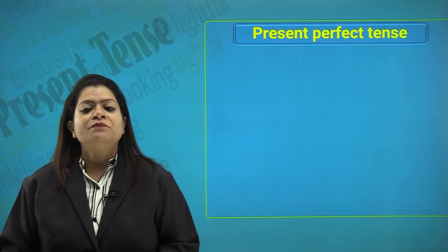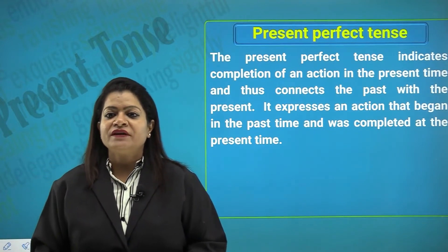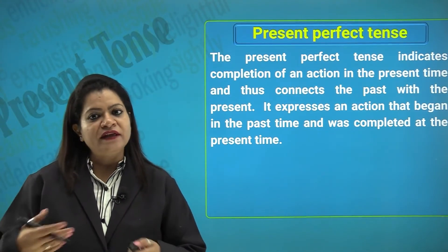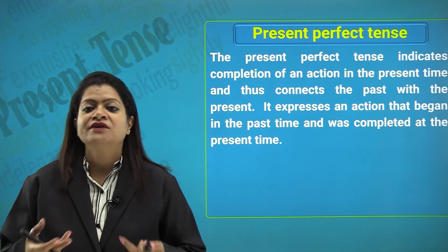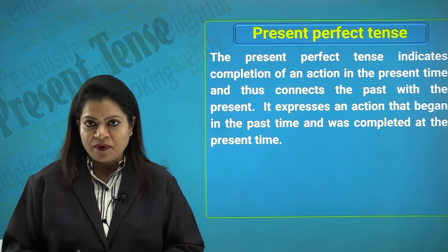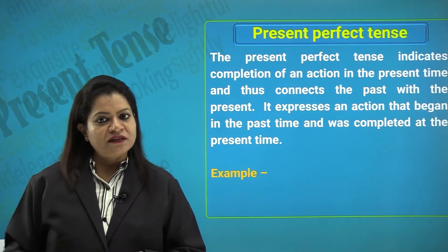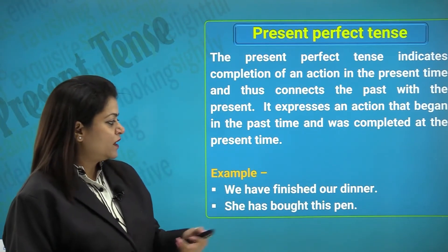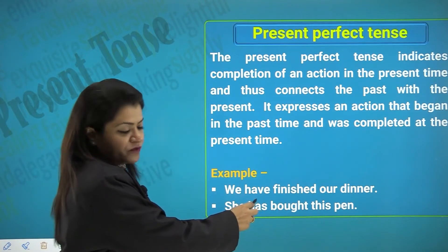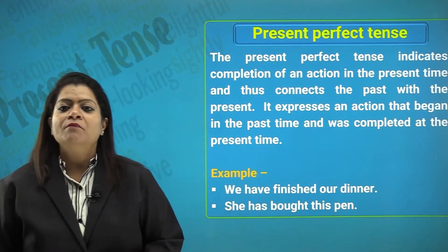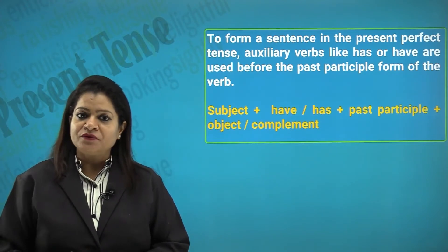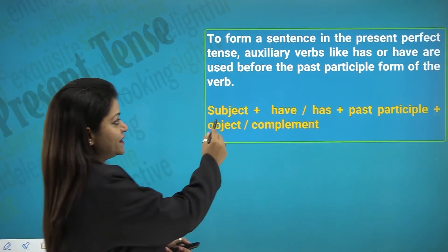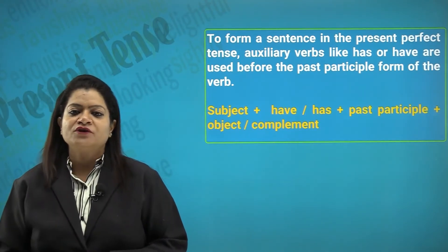Let us come to the third type — the present perfect tense. The present perfect tense indicates completion of an action in the present time, thus connecting the past with the present. It expresses an action that began in the past and was completed at the present time. For example: 'We finished our dinner,' 'She has bought this pen.' To form a sentence in the present perfect tense, auxiliary verbs 'has' or 'have' are used with the past participle form of the verb. The structure is: subject + have/has + past participle + object or complement.